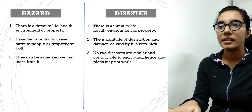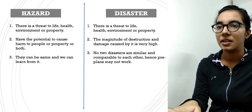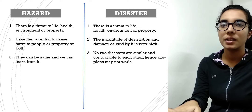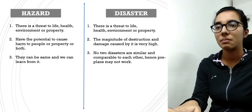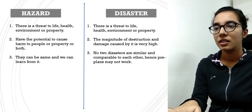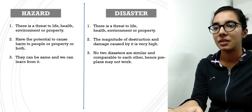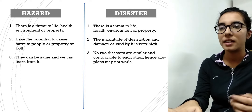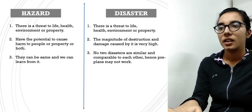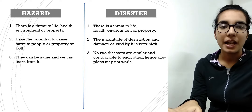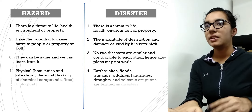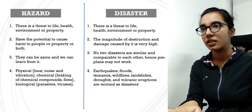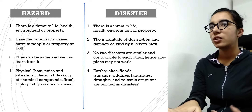Natural hazards can be the same and we can learn from them. For example, if there was a gas leak last year, we can control it by implementing a particular system or procedure to stop it so that it doesn't occur next time. On the other hand, no two disasters are similar or comparable to each other, and pre-planning may not work.